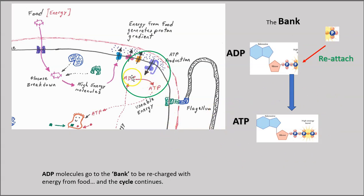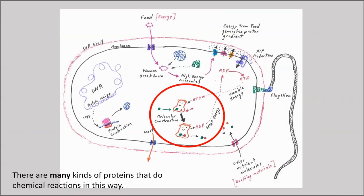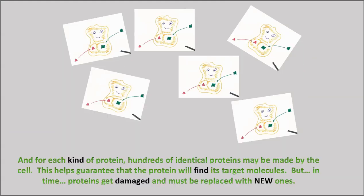Now for the cell to have the energy to do this chemistry, it's got to continually import food. Glucose has to be broken down. That's the energy that powers the bank proteins so they can keep on resupplying ATP energy to drive the chemistry of life. There are many kinds of proteins that do chemical reactions in this way. For each kind of protein doing some important chemical reaction, the cell makes many copies of that protein. This helps to guarantee that the protein will find its target molecules.